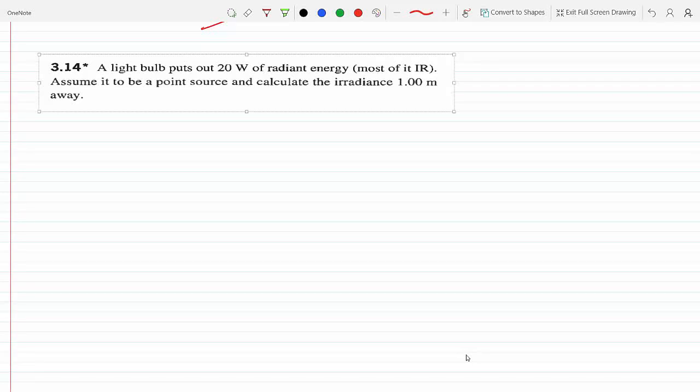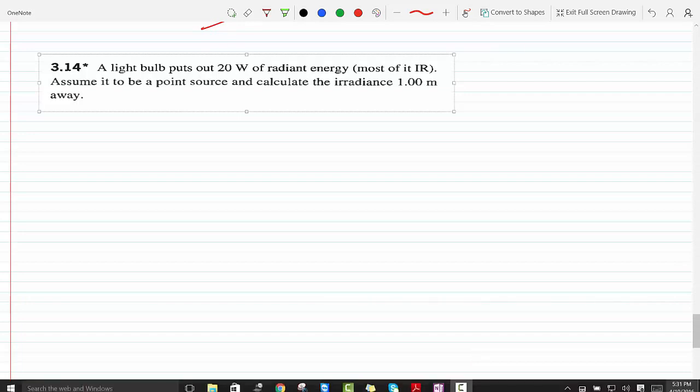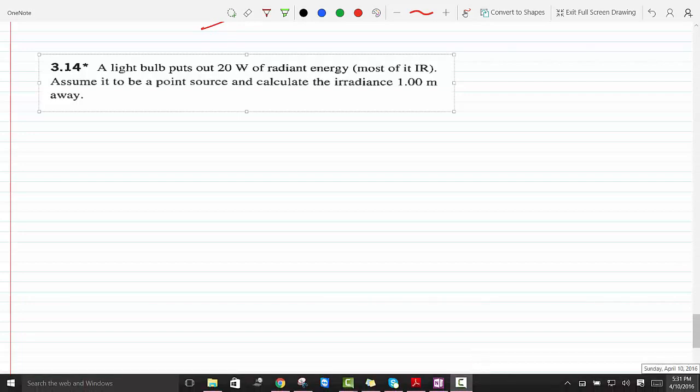Okay, so we have a light bulb, 20 watts of radiant energy, and we need to find the radiance. Radiance is what physicists used to call intensity.